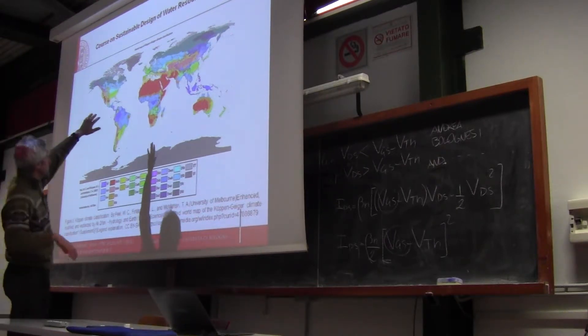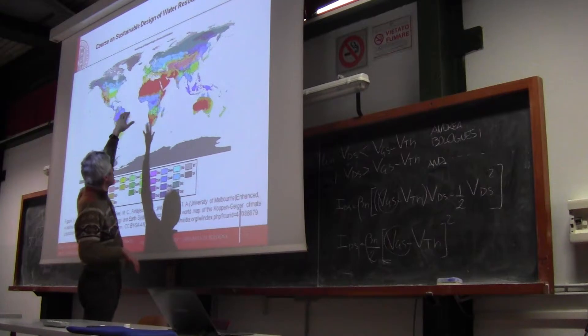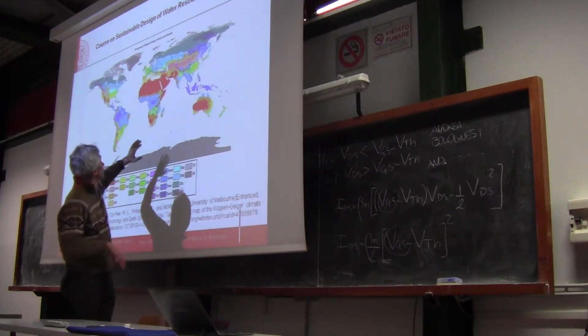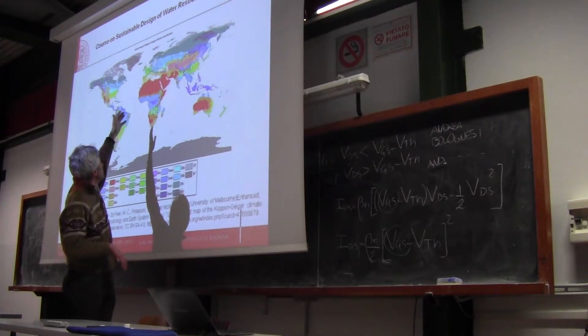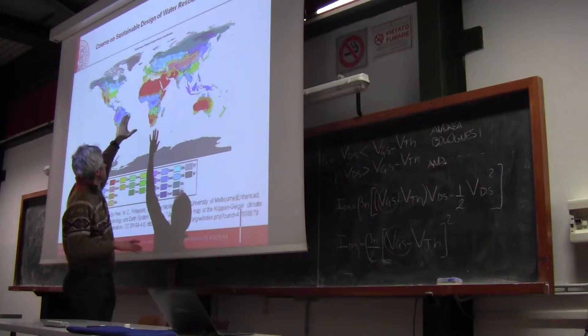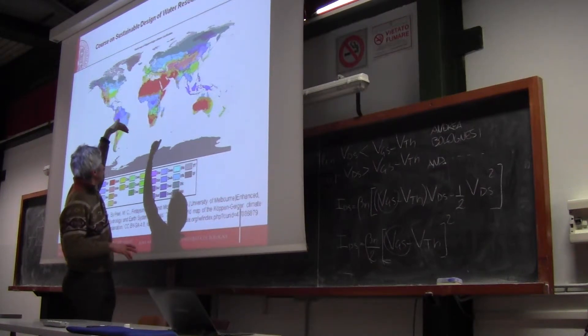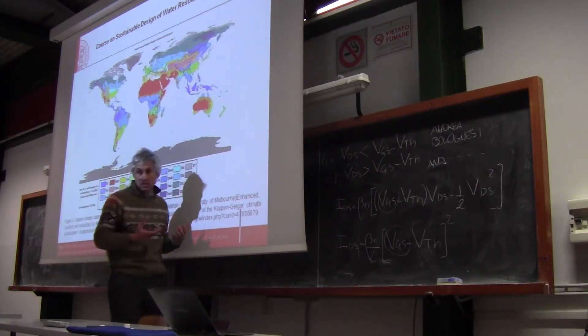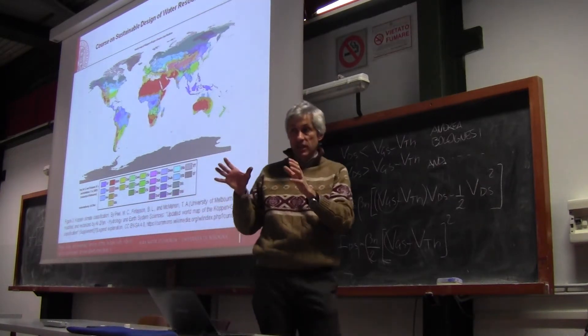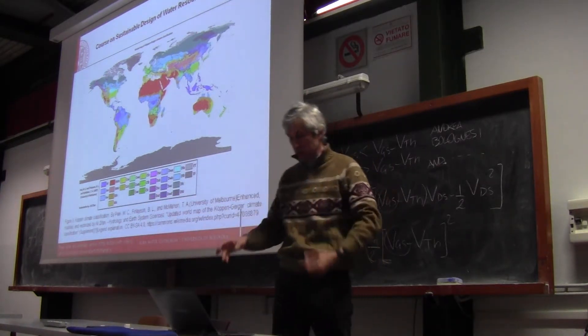So you see that Italy is green in the north, blue in the alps, yellow in the south. And also you see what we know in Europe, the east of Europe is fine, and of course Africa, the north of Africa is arid, like Australia. And this is based on just climate classification as I said.